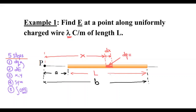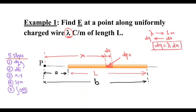This small charge is called dq. We know the charge per meter is lambda — the linear charge density. So if we have a length dx, the charge in this length is dq, and we get dq by multiplying lambda by dx. Now we know the charge and we can treat this as a point charge.